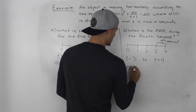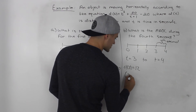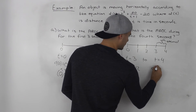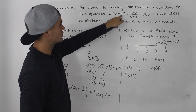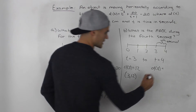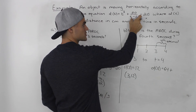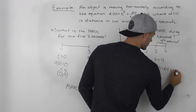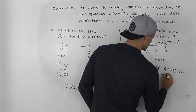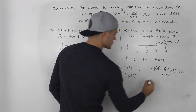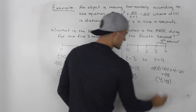We already know d(3) = 12, so the coordinate is (3, 12). For d(4), we plug in 4: 4³ = 64, plus 20 divided by (4+1) = 5, so 20/5 = 4, minus 20. That gives 64 + 4 - 20 = 48. So at time t = 4, the object has covered a distance of 48 centimeters.